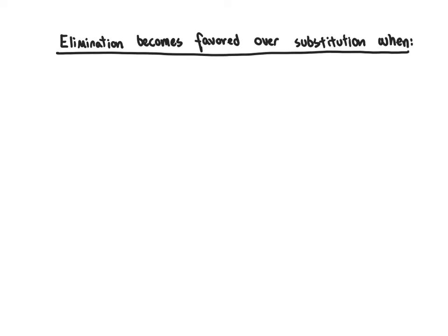These are the criteria we can look at to help predict whether elimination will be favored over substitution. The first thing on our list is that elimination reactions become more favorable the stronger the base is. The stronger the base, the more likely we are to get elimination — which should be no surprise, because elimination requires a base to grab that proton at the beta position. The stronger the base, the more eagerly it will react at the beta position.